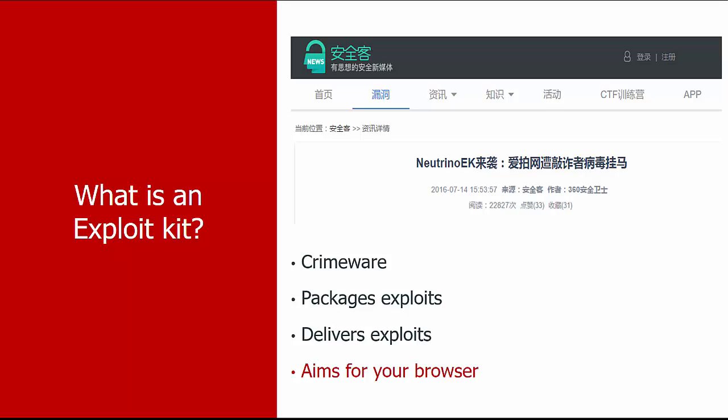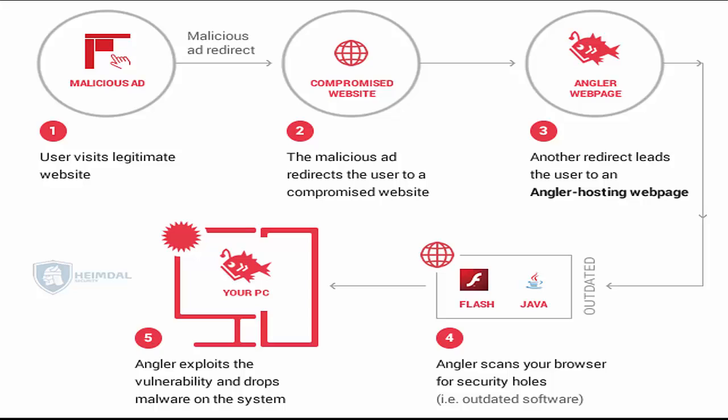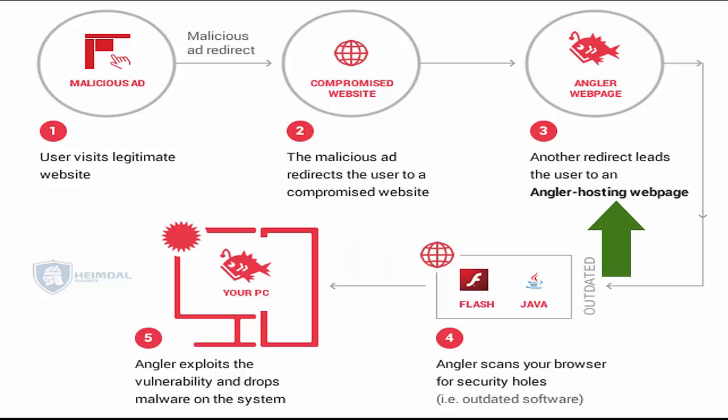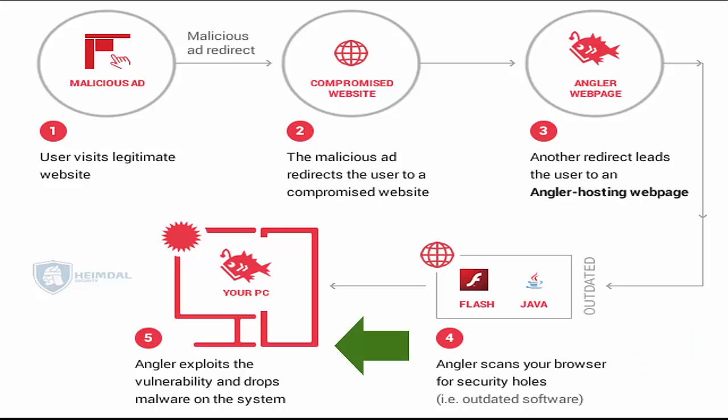The primary target is going to be people's browsers. If we go through the infection process, we start very simply and benignly with a user visiting a legitimate website. On that site, there happens to be a malvertising ad — nothing that would indicate it is malevolent in any way. Behind the scenes, several checks are being done against the browser to determine if there are vulnerabilities to be exploited. If there are, the user is redirected to the landing page of the exploit kit, where another scan is done of the browser, operating system, etc., to determine which particular exploit the kit will use. Then the exploit is executed and the malware is dropped on the system.